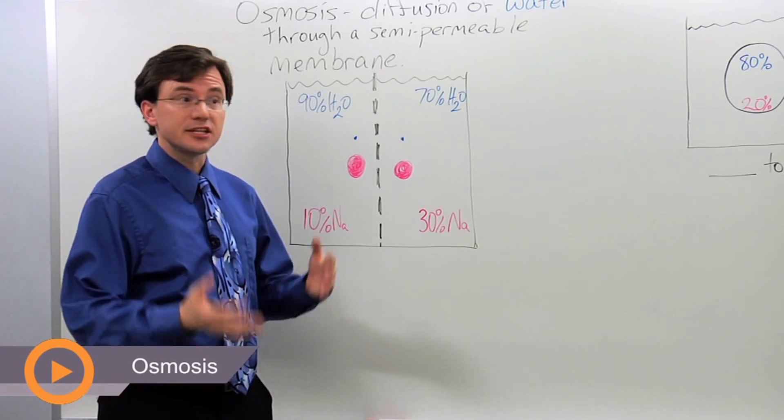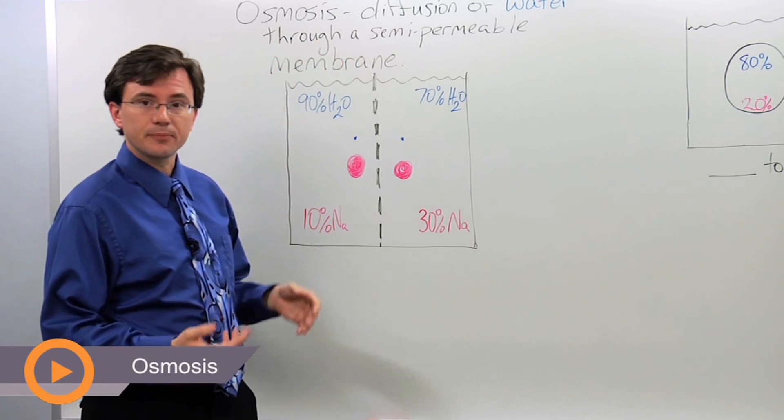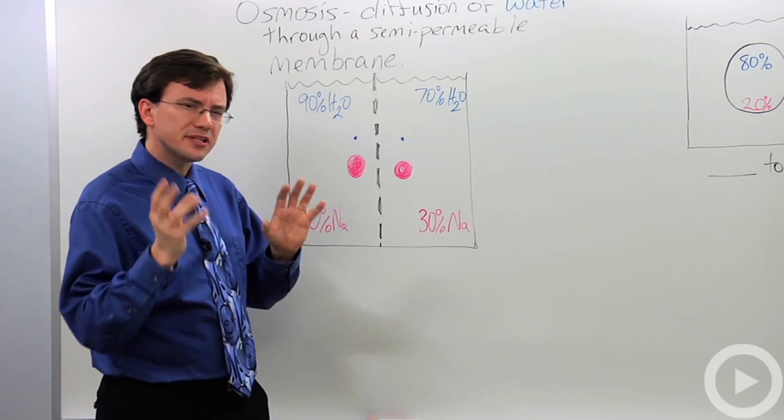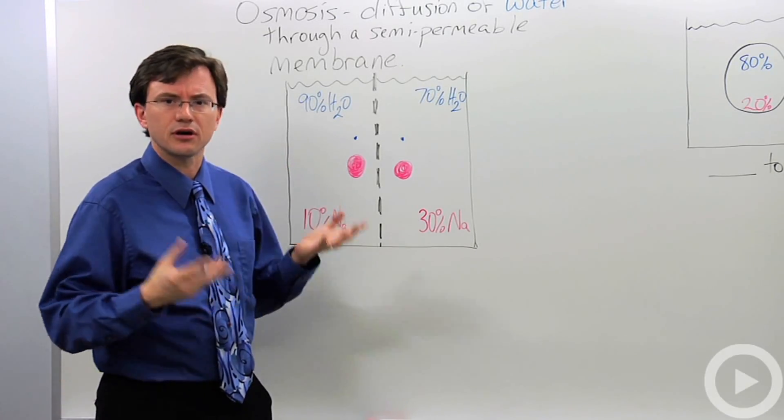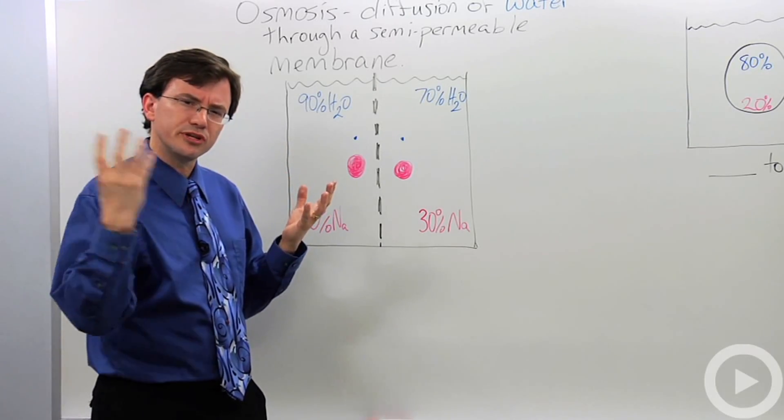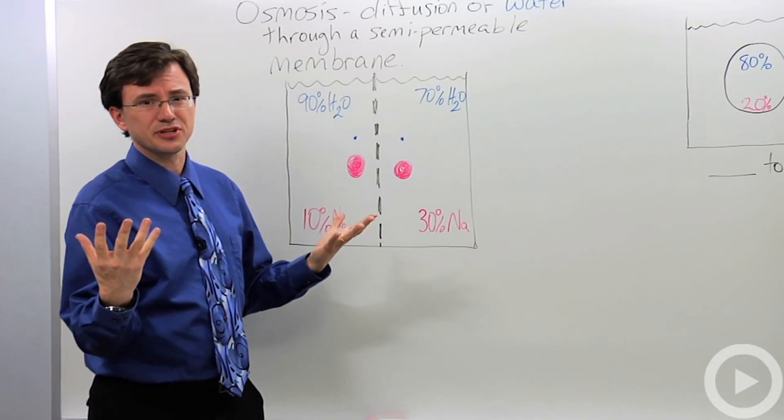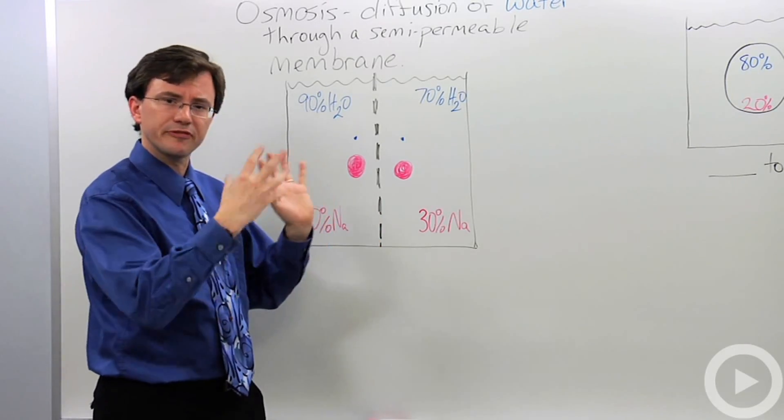Osmosis is the diffusion of water through a semi-permeable membrane, and this is something that a lot of teachers will spend a little bit of time on but then they'll hammer you with it on a test because it's really kind of unusual when you first approach it. A lot of kids don't really get what it means but to the teachers it's pretty obvious. So let me see if we can help you figure this out.